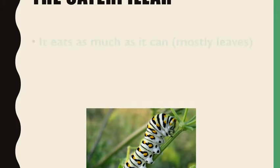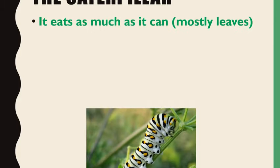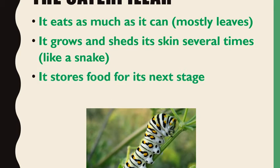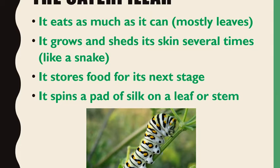Caterpillar. It eats as much as it can, mostly leaves. It grows and sheds its skin several times like a snake. It stores food for its next stage. It spins a pad of silk on a leaf or stem.